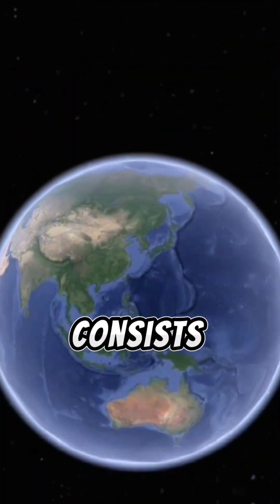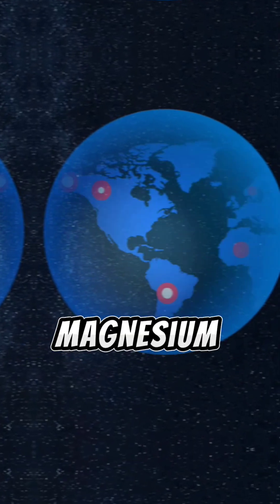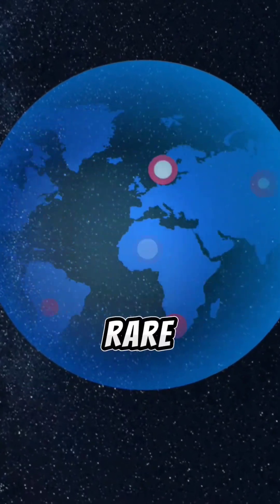Earth, unique in this regard, consists mainly of iron, oxygen, silicon, magnesium, and aluminum. Rare elements in the world.